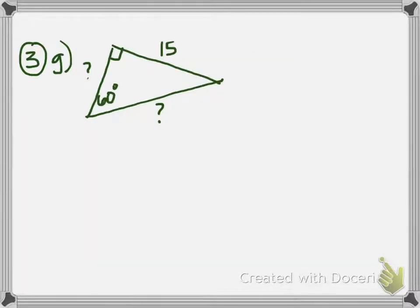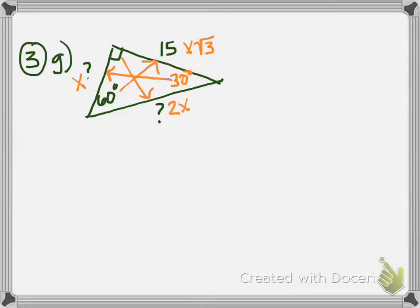For this right triangle we only know one side, so we have two choices: trig ratios or special right triangles. I'll use special right triangles since we have a 60° angle, so we use the 30-60-90 expressions. The known side is 15, across from the 60° angle, which has the expression x√3. The leg across from 30° is x, and the hypotenuse across from 90° is 2x. If we find x, we know the missing leg, and doubling it gives the hypotenuse.